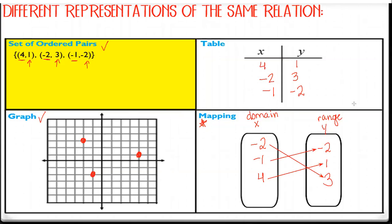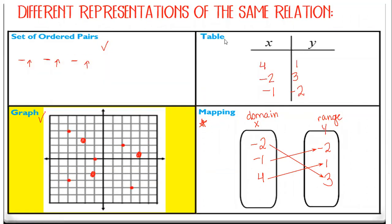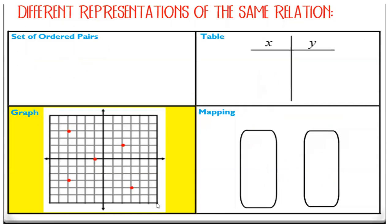Now the next few slides, we're going to look at: if I give you a graph, can you go from a graph to a set of ordered pairs? Can you go from a graph to a table? Can you go from a graph to a mapping? I'm going to pause the recording and let you guys try the next one on your own — take that graph and write it as a set of ordered pairs, a table, and a mapping.